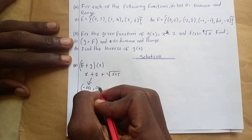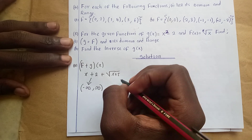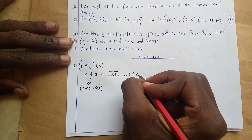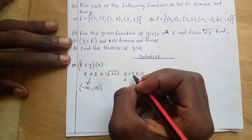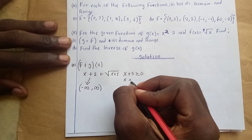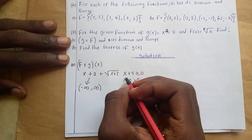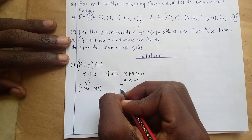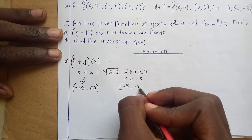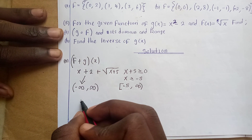For g(x), we find the domain by setting x plus 5 greater than or equal to zero, therefore x must be greater than or equal to negative 5. So the domain for g(x) starts from negative 5 going up to positive infinity. Now if we draw a number line like this...